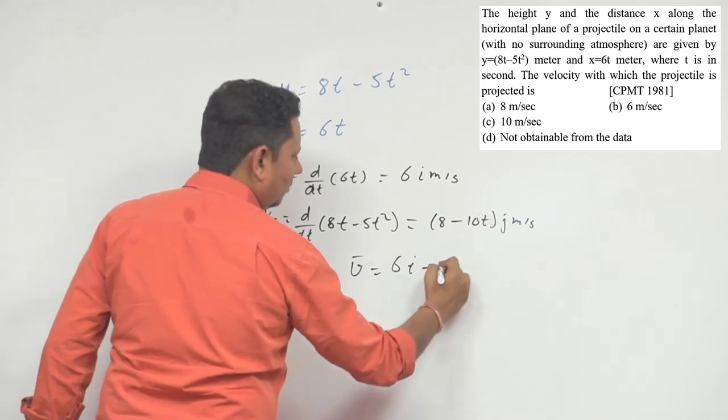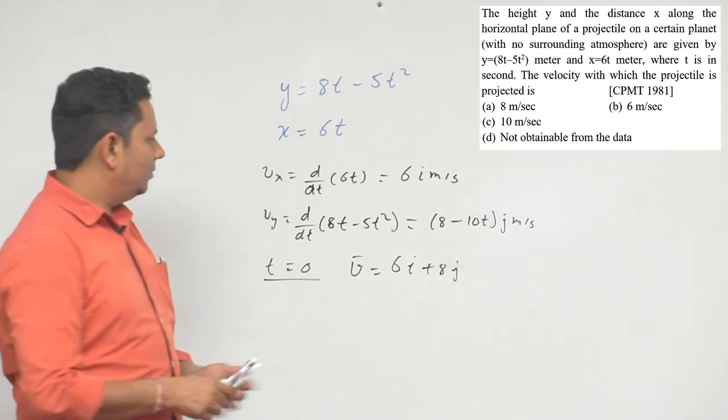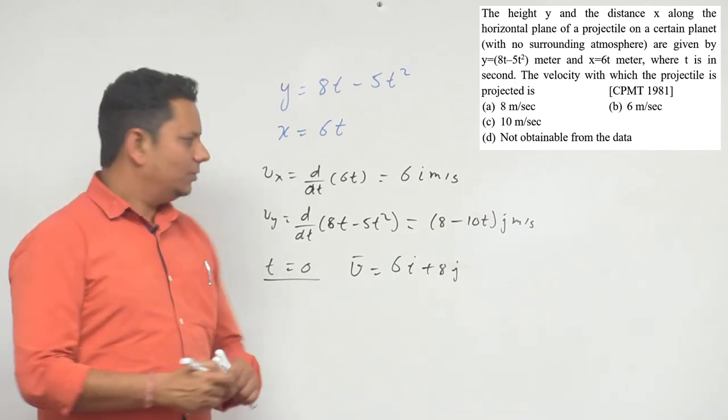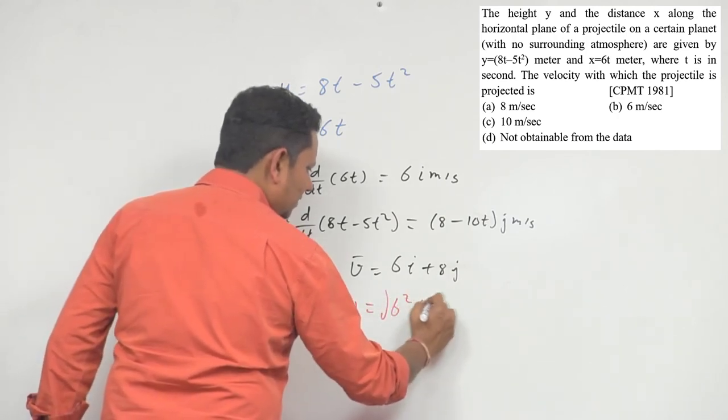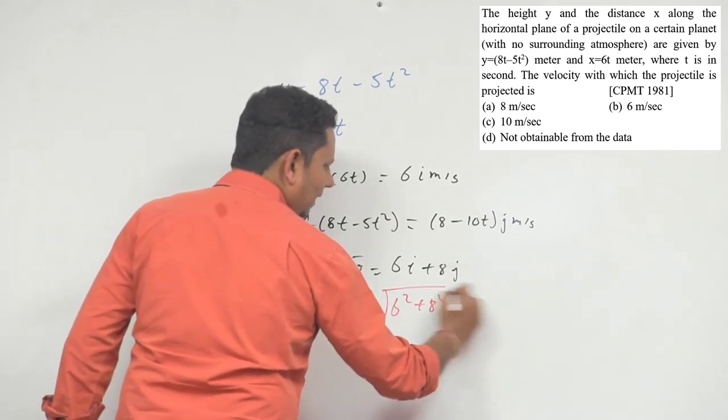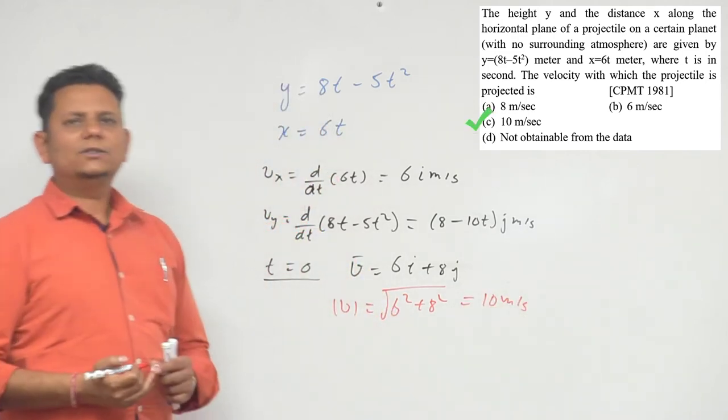Putting t equals zero, the velocity will be 6 i cap and here it will be 8 j cap. Since we have to find the magnitude, the magnitude will be the square root of both of these squared. So it will be under root of 6 square plus 8 square which gives under root 100.